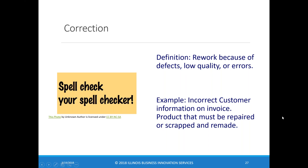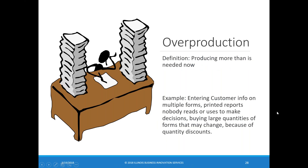The waste of overproduction is also known as the worst form of waste because it can cause almost all the other forms. It means producing more than I need right now — entering customer information on multiple forms, printing reports that nobody reads or uses. I worked with organizations putting in new ERP systems where we'd say, don't print any report with the new system and see how many people ask for them — often only about 10% of previously produced reports are actually used. Buying large quantities of forms at a discount even when you know you'll throw them away — that's overproduction, and it tends to cause almost all the other forms of waste.